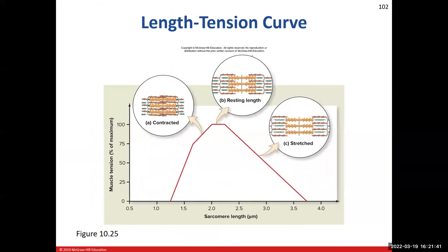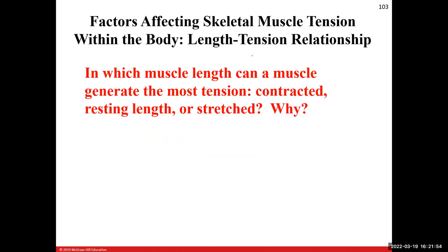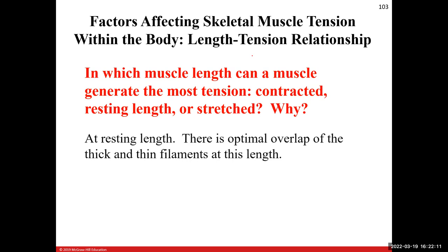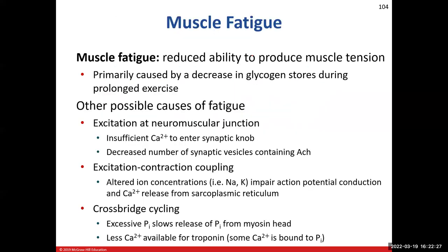The length-tension curve shows that at resting length there is optimal overlap of thick and thin filaments — maximum tension. Too short means no room for the Z disks to move further; too stretched means barely any overlap for cross-bridge formation. Resting length is the answer: it generates the most tension. This length-tension relationship also appears later in cardiac physiology.